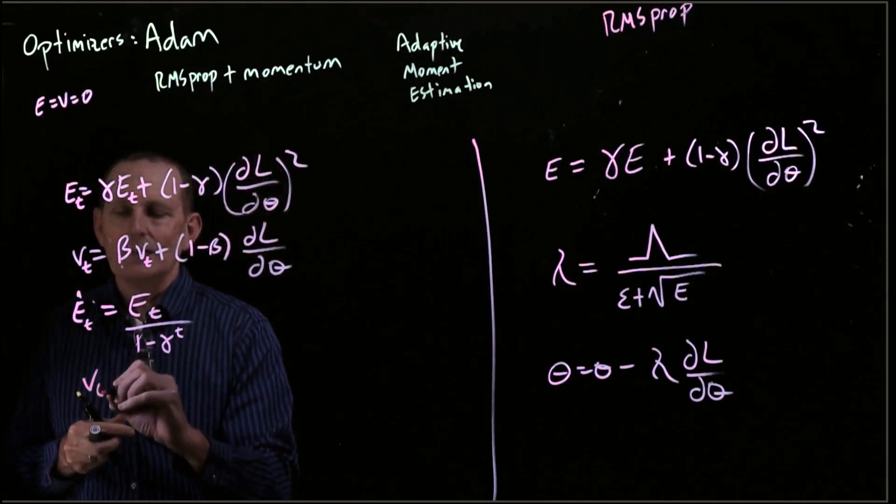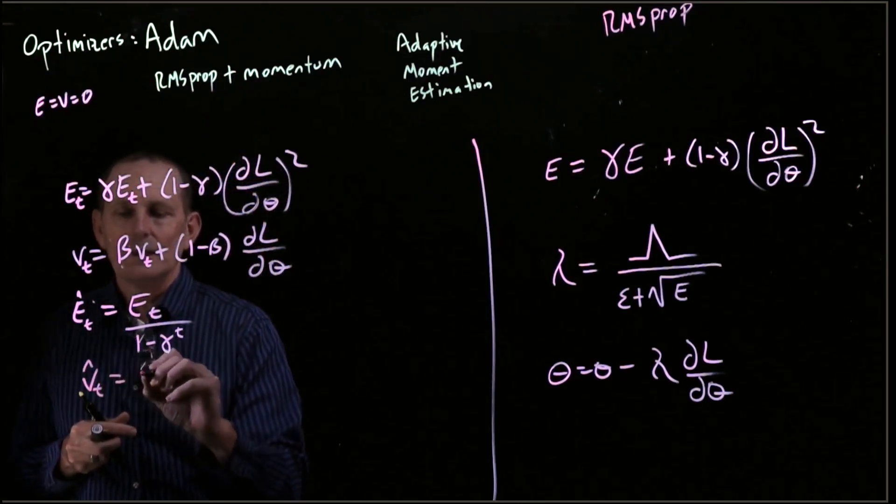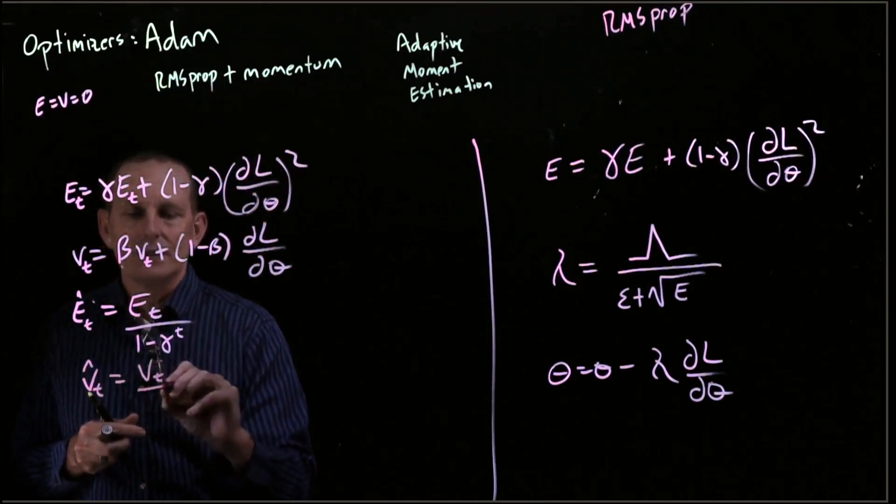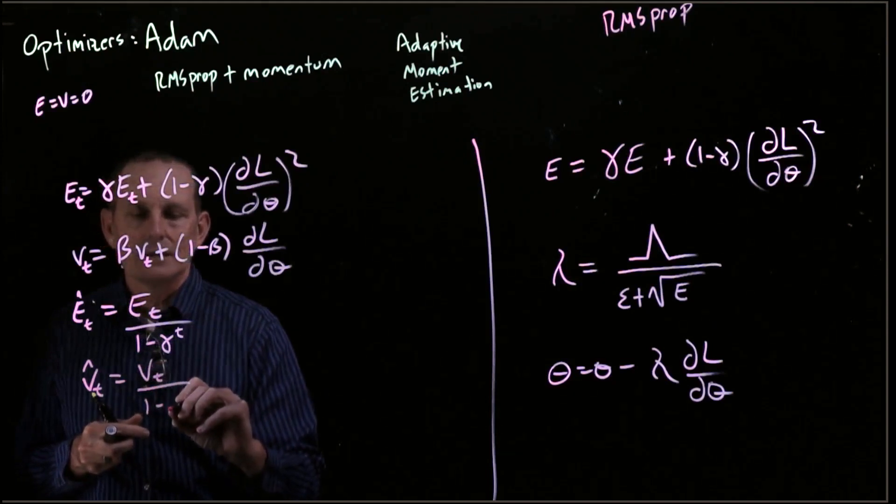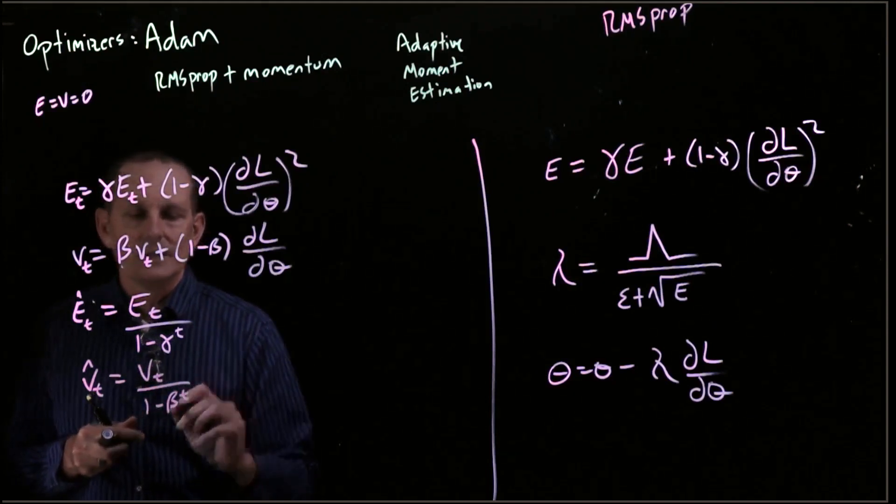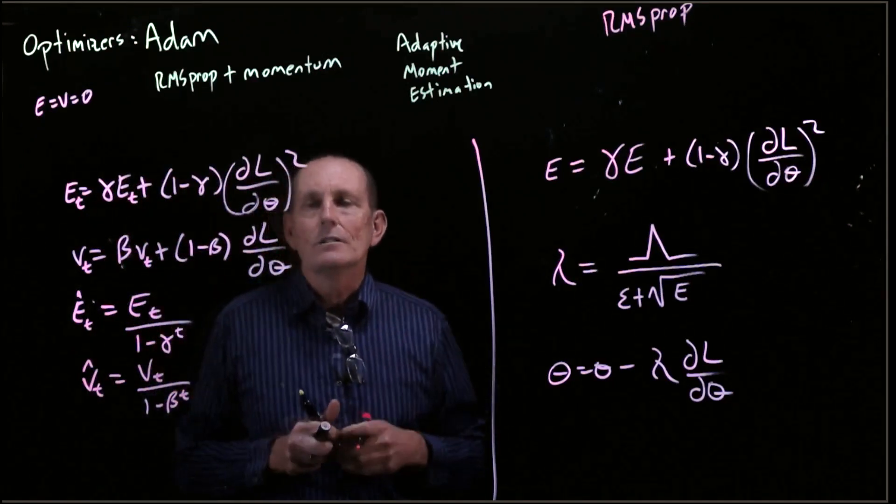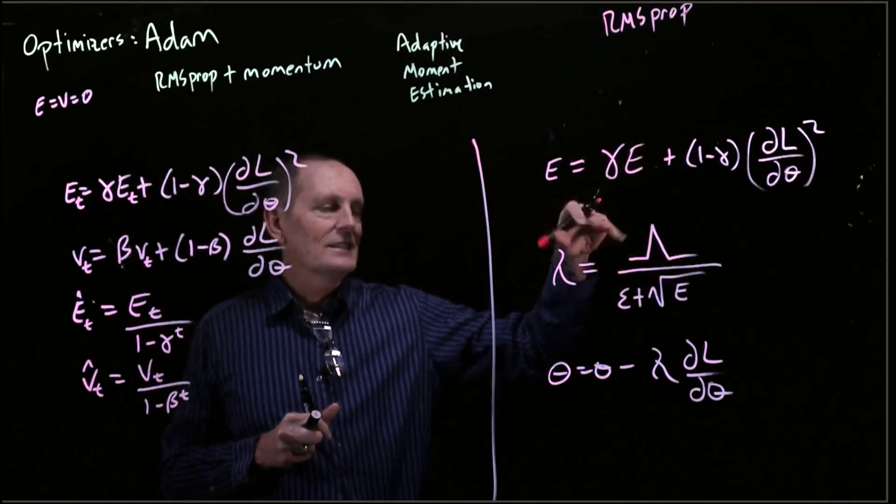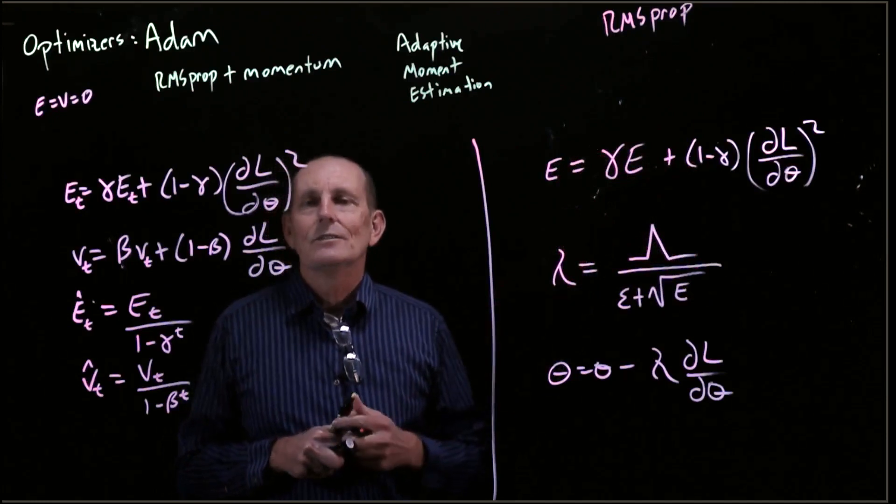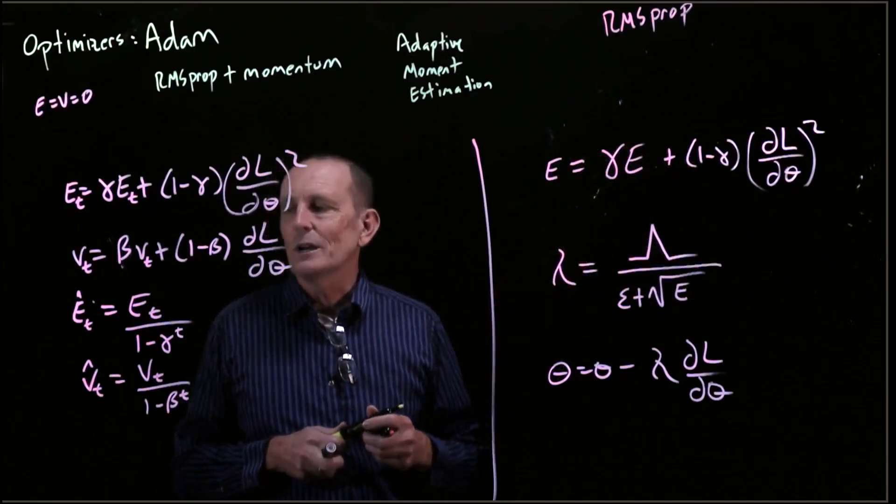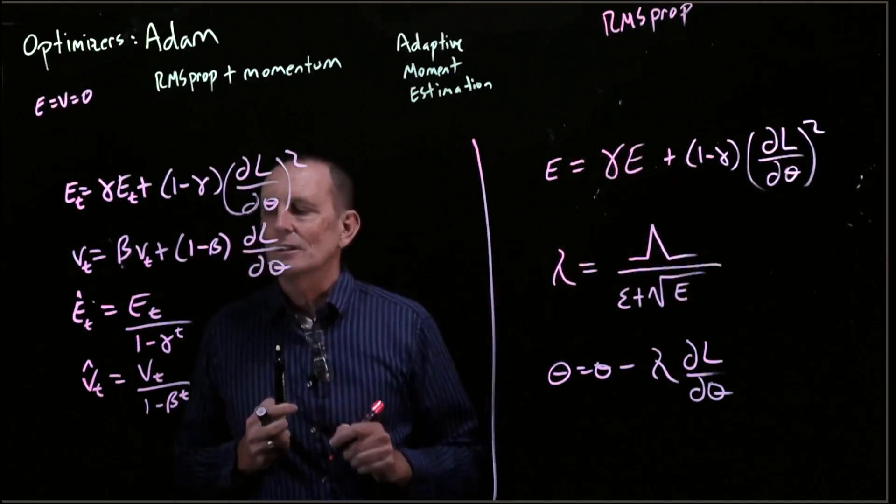Similarly, we're going to have V_T hat equals V_T over 1 minus beta to the T. So these basically just correct the startup of this root mean squared estimation of the sum of squares and the estimation of the velocity.